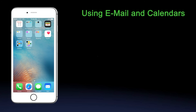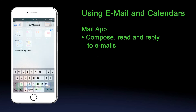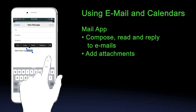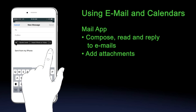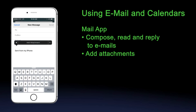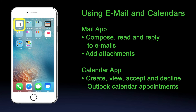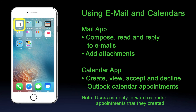Using Email and Calendars. The Mail app is used to compose, read, and reply to emails from your CMS Outlook mailbox. You can add attachments from your iPhone to your email messages by double tapping the body of the message and choosing your option from the selection menu. The Calendar app will allow users to create, view, accept, and decline Outlook calendar appointments. Users can only forward calendar appointments that they created.